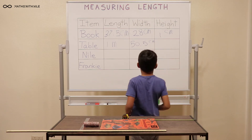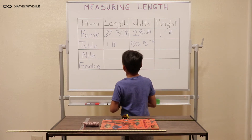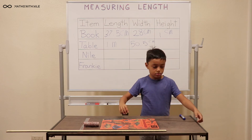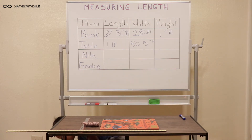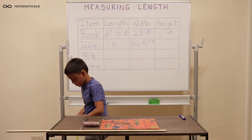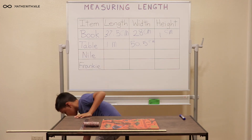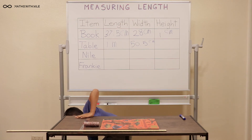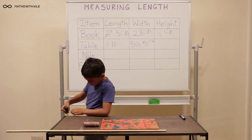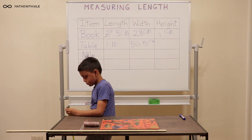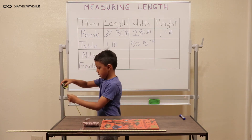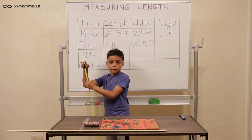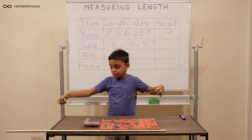Okay great, let's quickly do the height of the table. We're not going to be able to see the bottom of the table but we're going to trust that you started at the bottom. Okay, 77 centimetres. Write it in quickly.